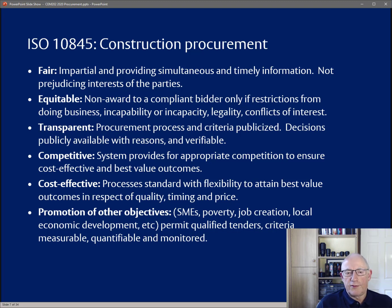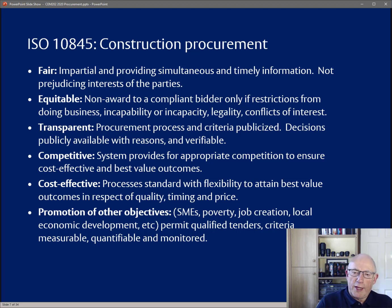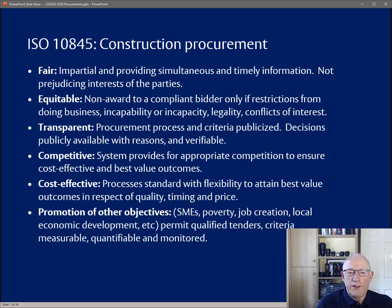Any tendering competition needs to be competitive so that there are cost-effectiveness and best value outcomes, and this concept of value needs to relate back to the criteria mentioned under transparency. The process should promote other objectives, especially in public sector work — helping the development of small to medium-sized enterprises (SMEs), helping with relieving poverty, job creation, local economic development, and so forth. These secondary objectives often require qualified tenders where bidders explain how they would achieve each explicit secondary objective. The criteria for all of these must be measurable, quantifiable, and there must be some mechanism for monitoring the achievement of these objectives during the discharge of the work.